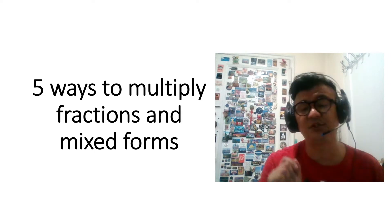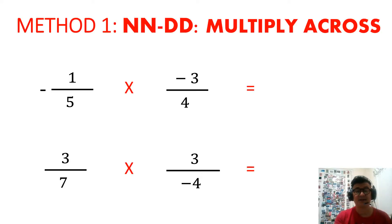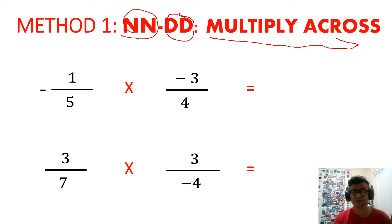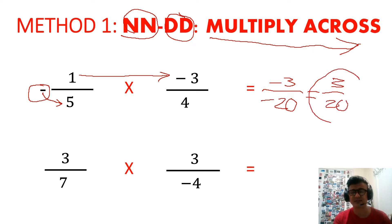Now we're ready to multiply. I'll present 5 ways to multiply fractions and mixed forms. Method 1 is NNDD — numerator to numerator, denominator to denominator; just multiply across left to right. For example: 1 times negative 3 is negative 3 on top. The negative can belong to either factor — it doesn't matter. Suppose I place it so that negative 5 times 4 is negative 20. Then negative divided by negative is positive, giving 3 over 20. Same signs, positive.